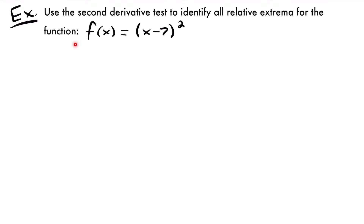Welcome back. Let's start with this example. We want to use the second derivative test to identify all relative extrema for the function f(x) = (x-7)². The first thing you do is take the first derivative and find your critical values. You'll plug those critical values into your second derivative to test whether it's positive or negative, which determines if that critical value is a relative minimum or a relative maximum.